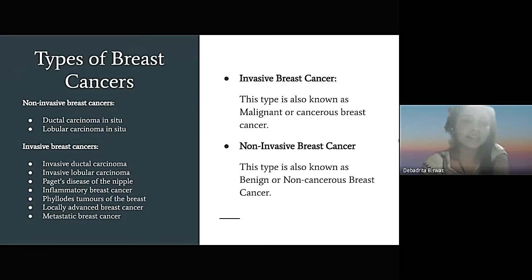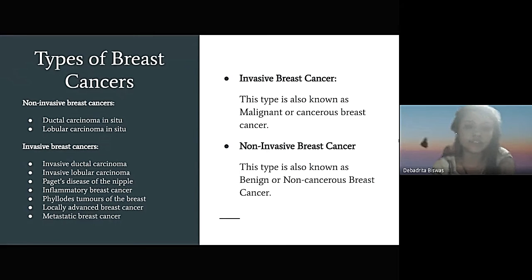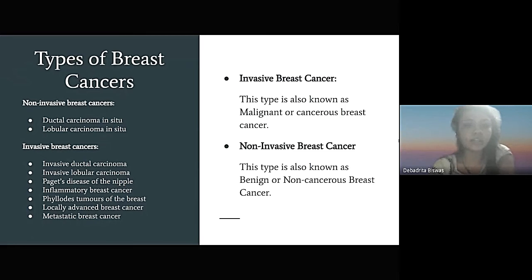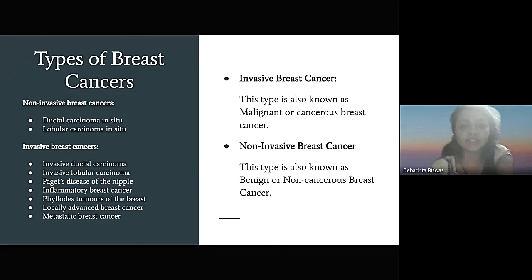There are two main types of breast cancer: non-invasive and invasive breast cancer. Invasive breast cancer is the malignant or cancerous type, with two main forms — ductal and lobular. Non-invasive breast cancer is also known as the benign type.